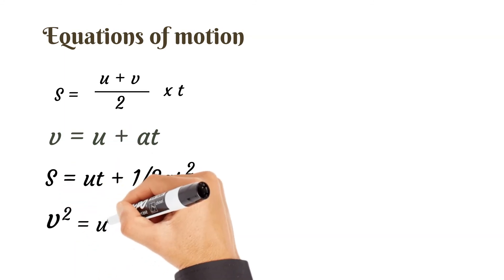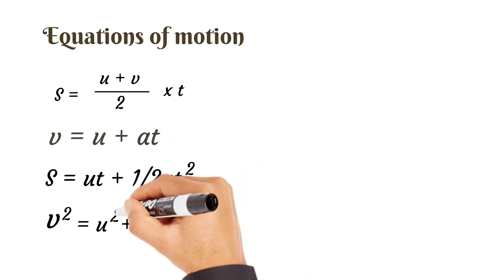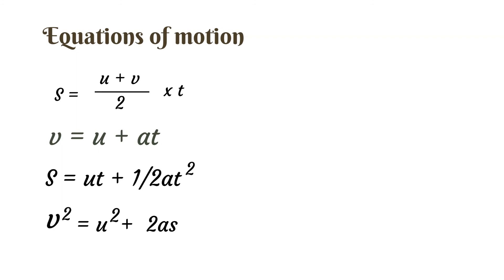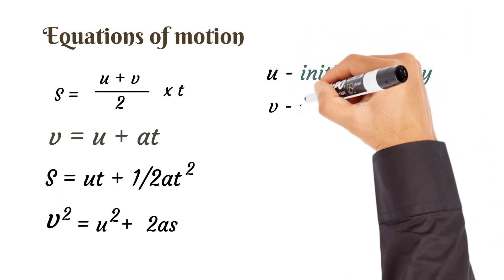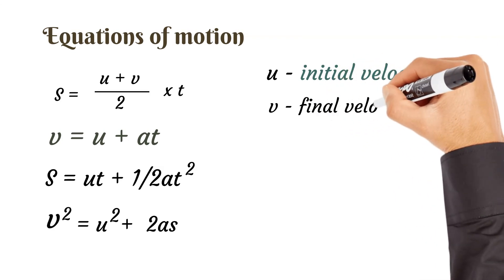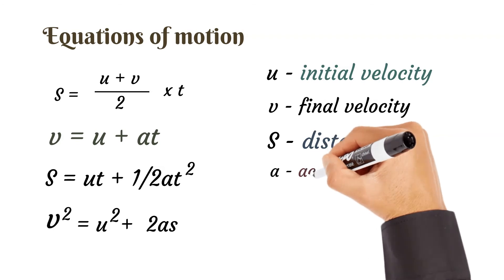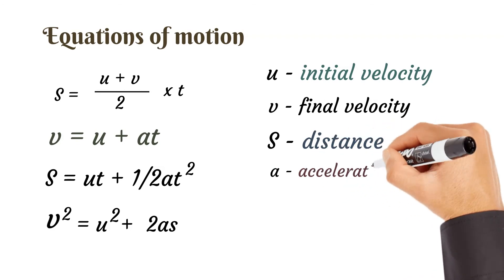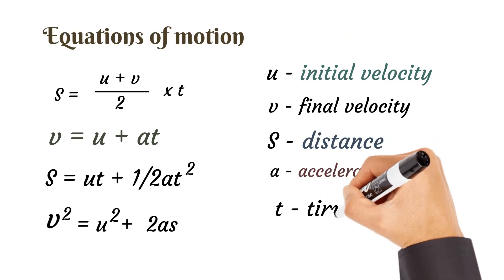And finally, v squared equals u squared plus 2as. You have to know these equations before we start solving. In the next video we are going to be solving questions, but you need to know them first. u represents initial velocity, v represents final velocity, s represents distance, a represents acceleration, and t represents time.